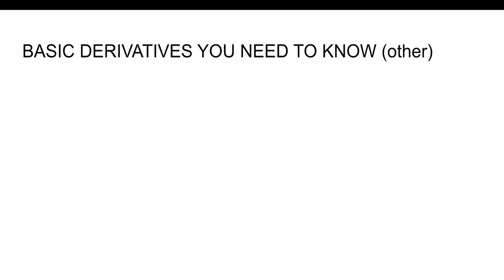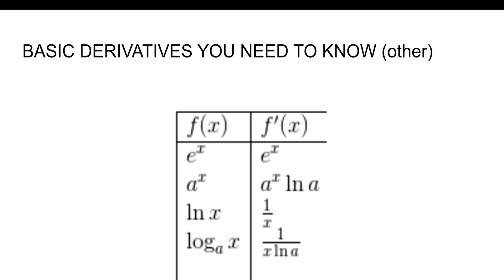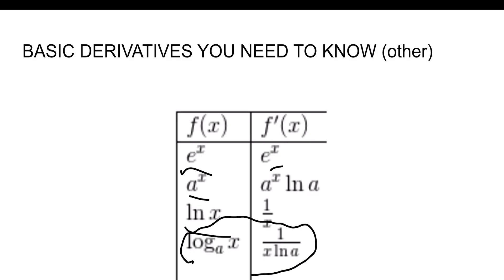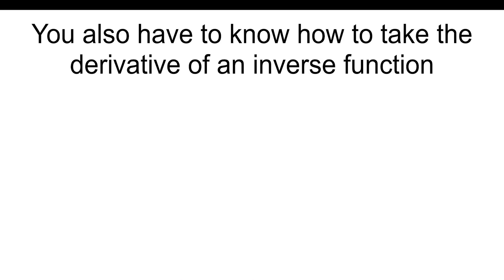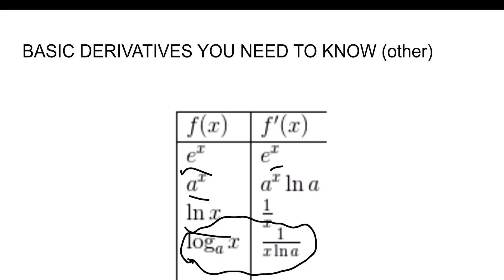Next, you have some other basic derivatives. The derivative of e to the x is just e to the x. The derivative of a to the x is a to the x times the natural log of a. The derivative of the natural log of x is 1 over x. And the derivative of log base a of x is 1 over x times the natural log of a — a lot of people forget this one, but it can appear on a multiple choice question.